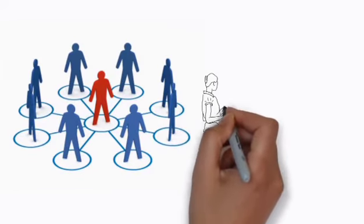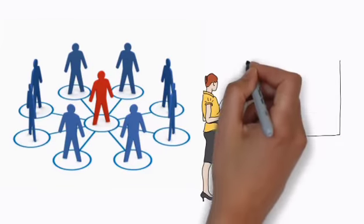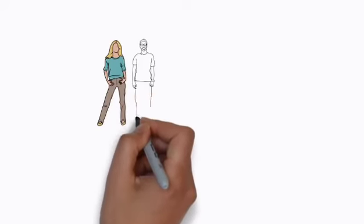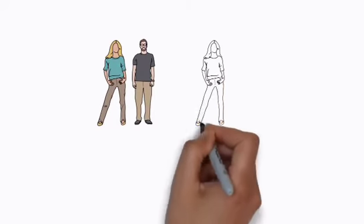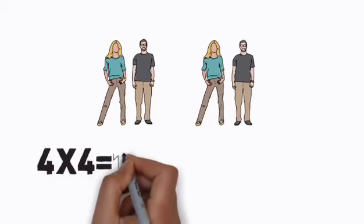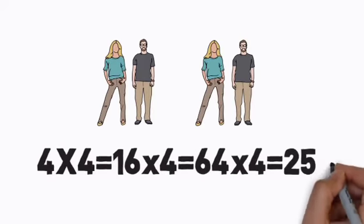If you only sponsored two people and taught them to do the same, this is how it would look. Duplicated a system, more than the initial two. If each person did four, now you can see a profound difference in numbers. Four times four equals sixteen, times four equals sixty-four, times four equals 256.